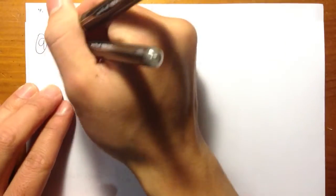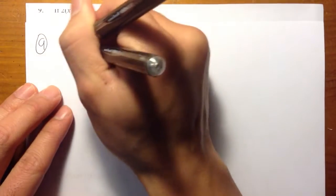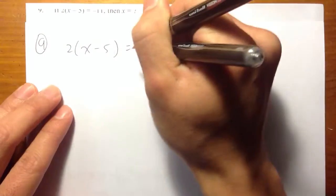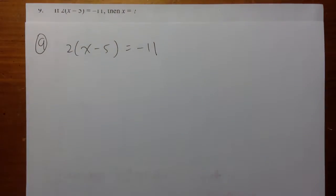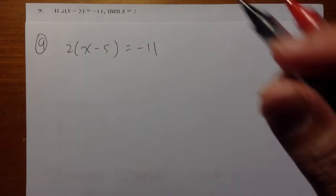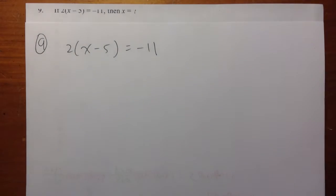For question number 9, we are solving an equation. This equation is 2 times x minus 5 is equal to negative 11. So how do you solve for x?